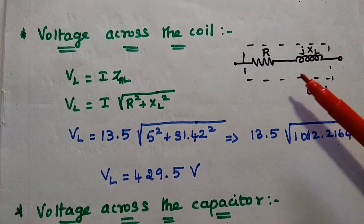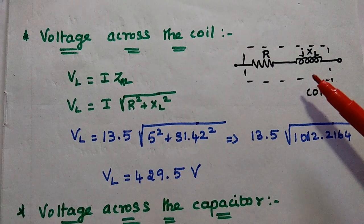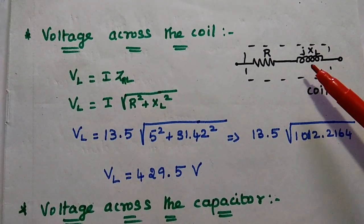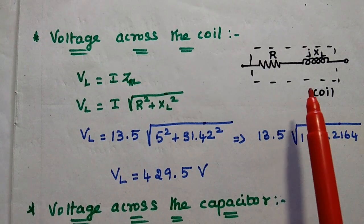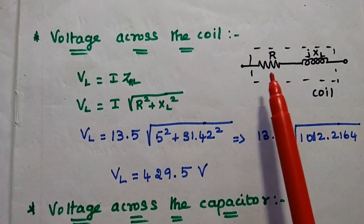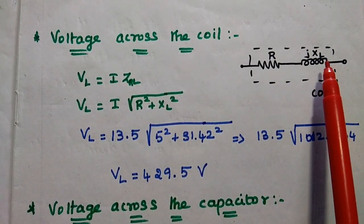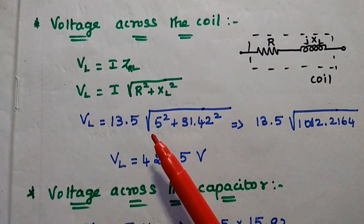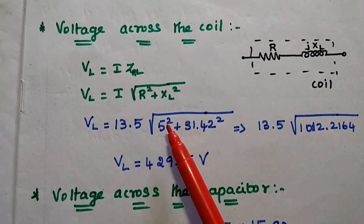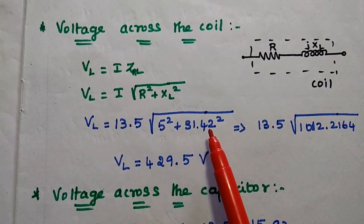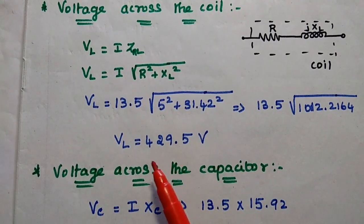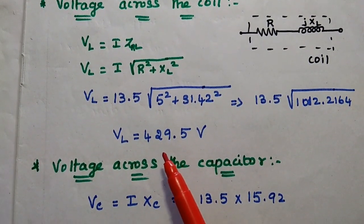Next we are going to find out the voltage drop across the coil. The coil is the combination of resistor and inductor connected in series, so we consider it as an RL circuit. VL is equal to I into Z_RL, where the magnitude is the square root of R squared plus XL squared. Substituting I as 13.5, R as 5, and XL as 31.42 — square root of 5 squared plus 31.42 squared — we get VL equal to 429.5 volt.